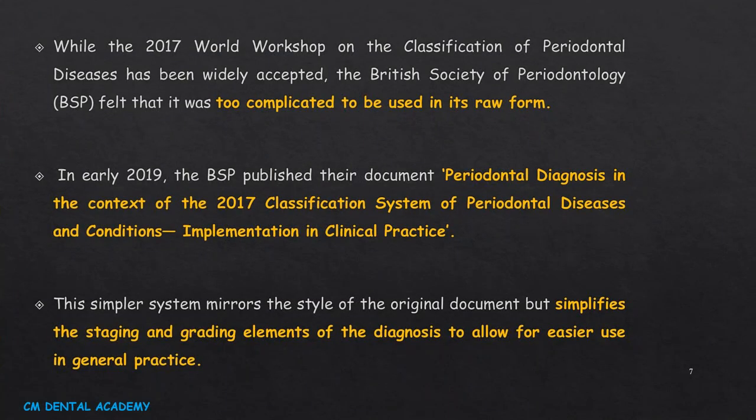While the 2017 World Workshop on Classification of Periodontal Diseases has been widely accepted, the British Society of Periodontology felt it was too complicated in its original form. In early 2019, BSP published their document — 'Periodontal Diagnosis in the Context of the 2017 Classification System of Periodontal Diseases and Conditions and its Implementation in Clinical Practice.' This simpler system mirrors the original document but simplifies the staging and grading elements to allow for easier use in general practice.